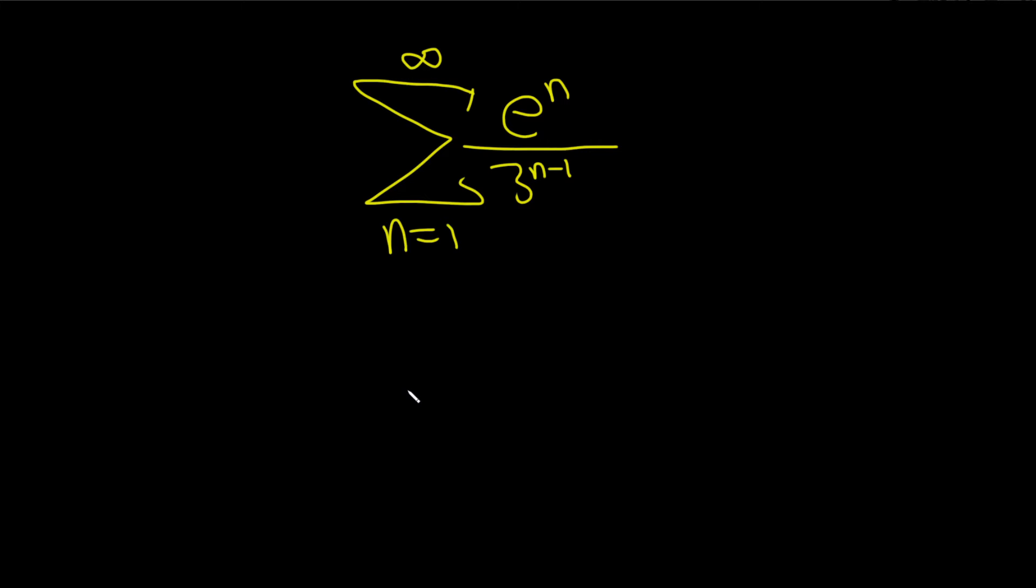This appears to be geometric, so geometric series generally look like the sum of a times r to the n, or a times r to the n minus 1. Any of these forms is typically considered geometric. Here we have two numbers with different powers, so we need to do some manipulation.